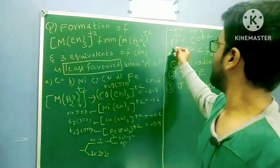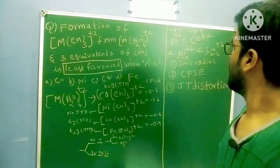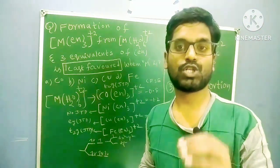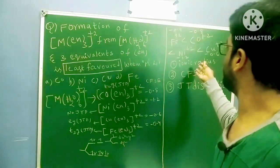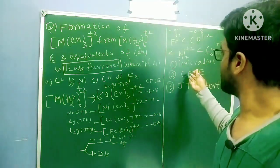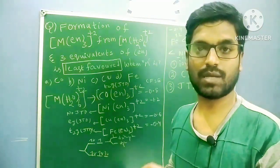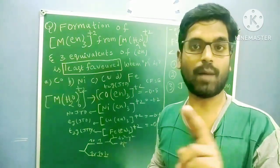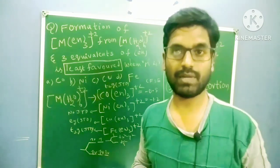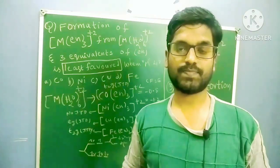Second factor: Crystal Field Stabilization Energy (CFSE). The CFSE values are — Fe²⁺: 0.4, Co²⁺: 0.8, Ni²⁺: 1.2, Cu²⁺: 0.6. According to the first point, Cu²⁺ should have high CFSE, but here Ni²⁺ has higher CFSE than Cu²⁺. So this CFSE factor is not supporting Cu²⁺ being the most stable.